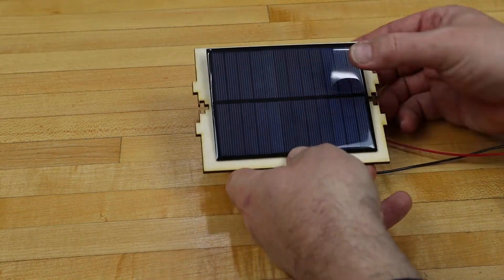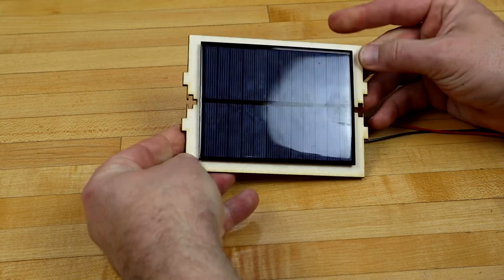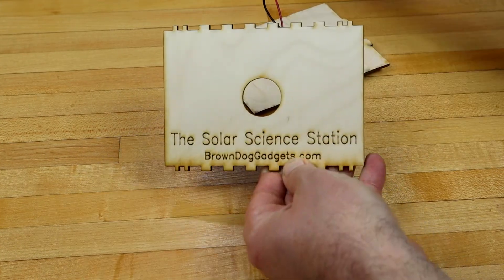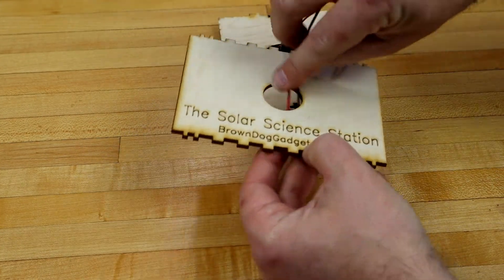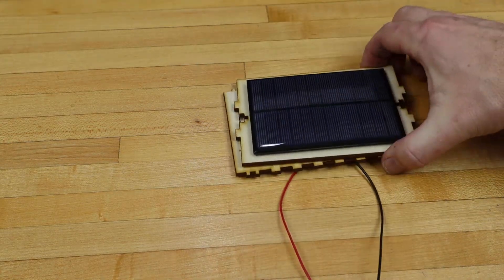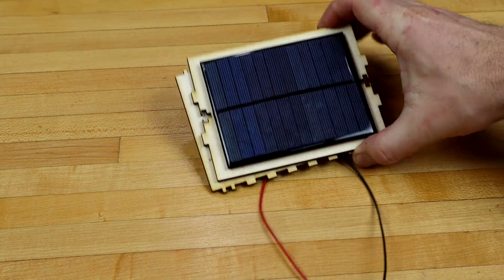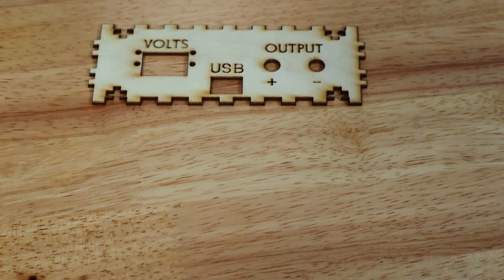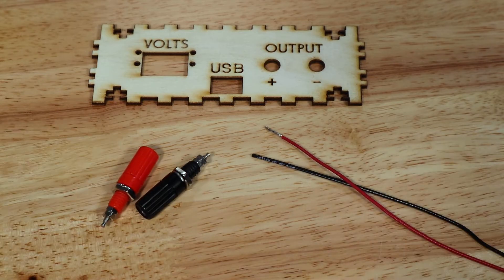Thread the wires from the solar cell through the top of the box. Grab the faceplate, banana sockets, and the stripped red and black wires.